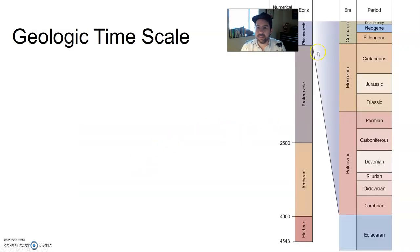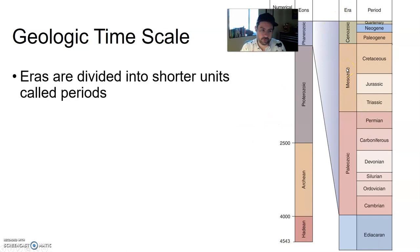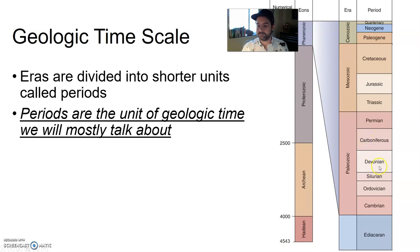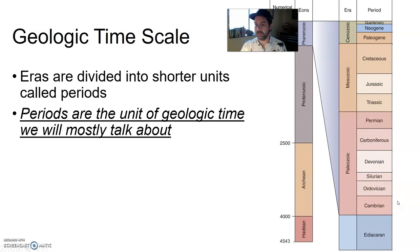We take the eras and divide them into even shorter units called periods. Periods are important because they are the unit of geologic time we will talk about the most. Similar to eras, these are broken up by changes in the fossil record, new species evolving, and some going extinct. We have: Quaternary, Neogene, Paleogene, Cretaceous, Jurassic, Triassic — the Jurassic, like Jurassic Park, is in the middle of the Mesozoic — Permian, Carboniferous, Devonian, Silurian, Ordovician, and Cambrian.